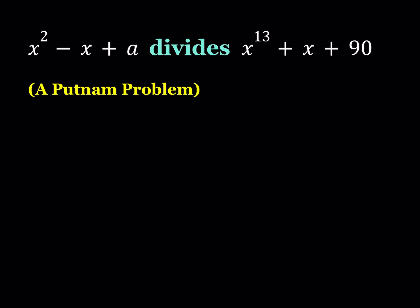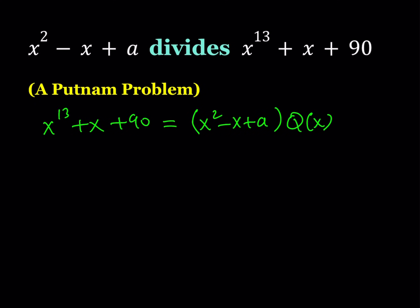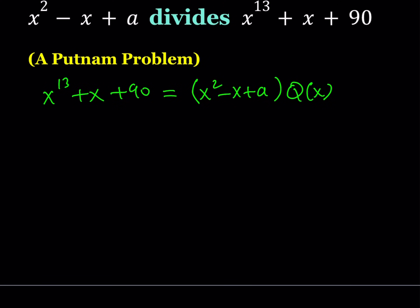So a is an integer and we want to make sure that the quadratic divides the 13th degree polynomial. Let's go ahead and write this as an equation. x to the power 13 plus x plus 90 can be written as x squared minus x plus a multiplied by some polynomial q of x. To find the possible a values we're going to replace x with certain values. It makes sense to use 0 and 1, since we have x times x minus 1 plus a as our divisor.